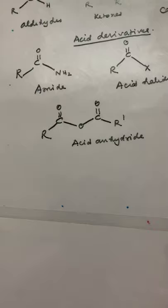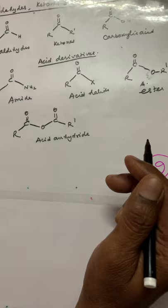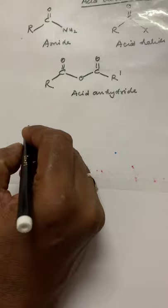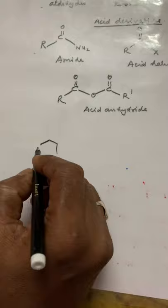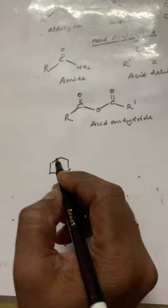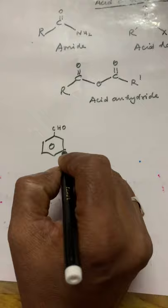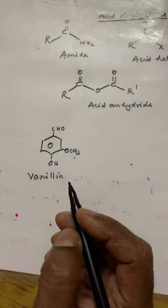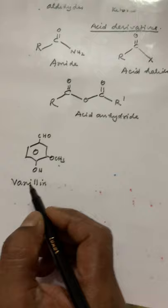These acid derivatives we are not going to see in detail; we are just going to study only the IUPAC name. Now, you take some common names as well as IUPAC names. Take the example vanillin — that is a benzene ring with CHO, OCH3, and OH groups. This compound's common name is vanillin, which is used in ice cream.